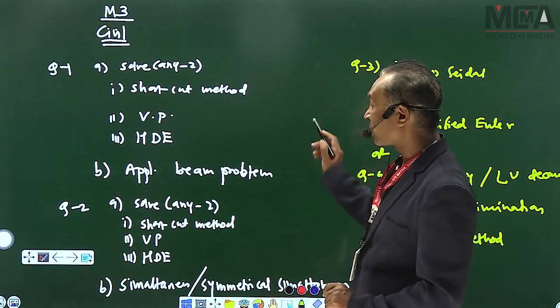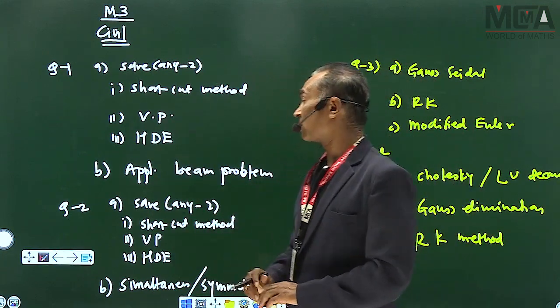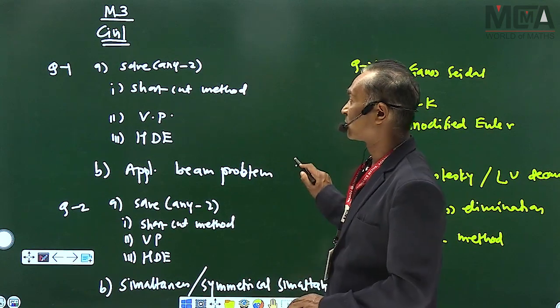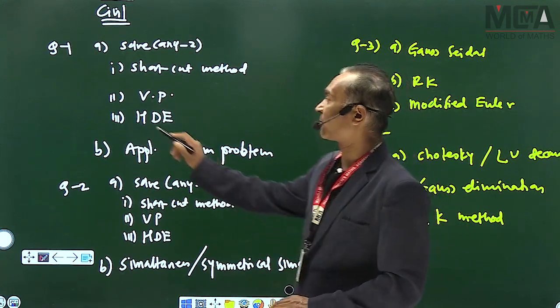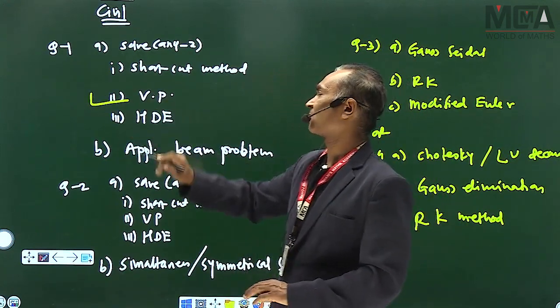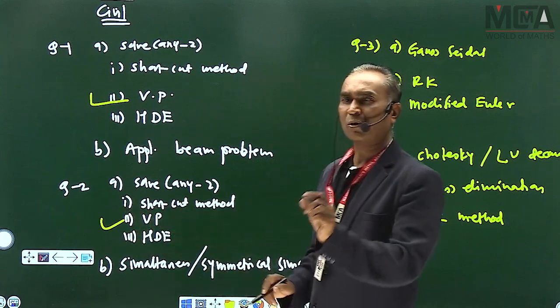Now, first of all, I am telling you what kids are wrong in Unit 1. First of all, you have to learn this topic: Variation of Perimeter. Because there are both of them, and you have to do the first two sums.